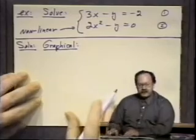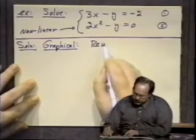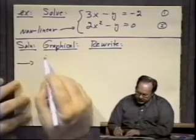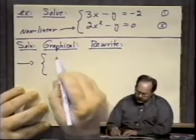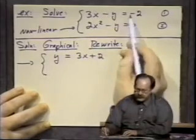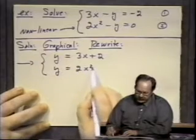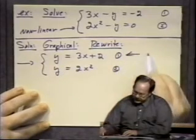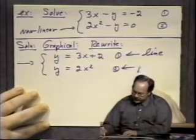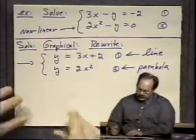A graphical technique is a good idea, so let's rewrite these to graph them easily. Solving for y in both: y equals 3x plus 2 from equation 1, and y equals 2x squared from equation 2. The graph of the first is a line and the graph of the second is a parabola — a very familiar form.